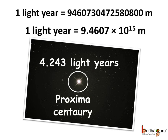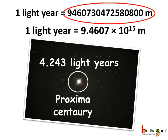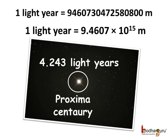1 light year is equal to this many meters. That's a huge number. But using exponents, we can simplify it and write: 1 light year is equal to 9.4607 multiplied by 10 to the power 15 meters.